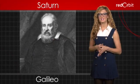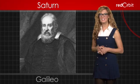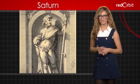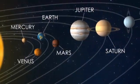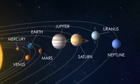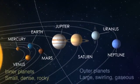Discovered by Galileo in 1610, Saturn is named after the Roman god of agriculture. It is the sixth planet from the sun, and like the other outer planets, is a giant ball of swirling gas.